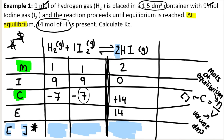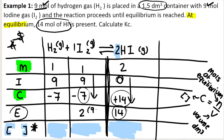Then to get the equilibrium row, I work down each column. For HI: zero plus 14 gives me 14. For H₂: nine minus seven gives me two — what I started with minus the change, because it's a reactant and reactants are used up. And again, nine minus seven gives me two for I₂ as well. So now I have my moles at equilibrium.